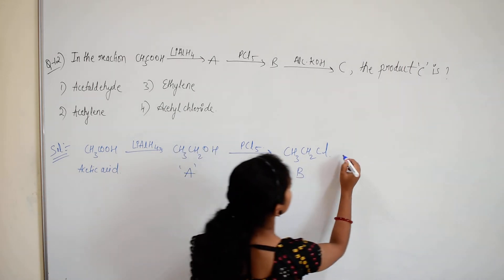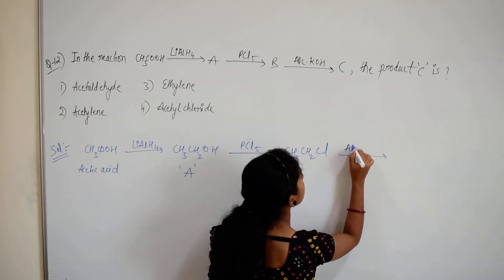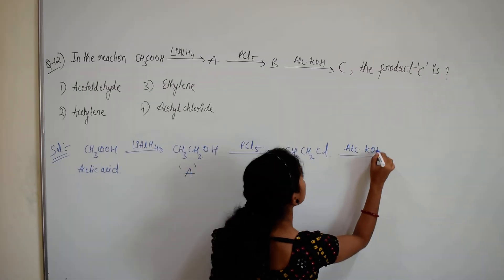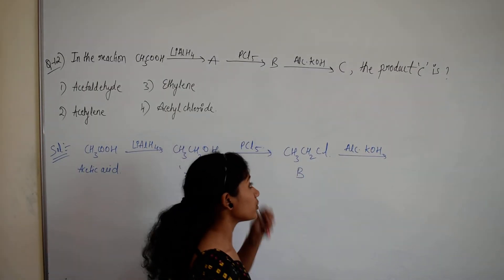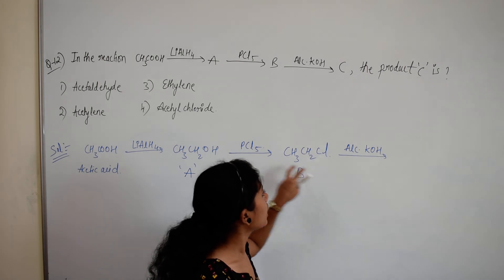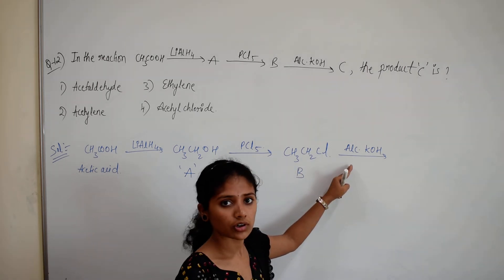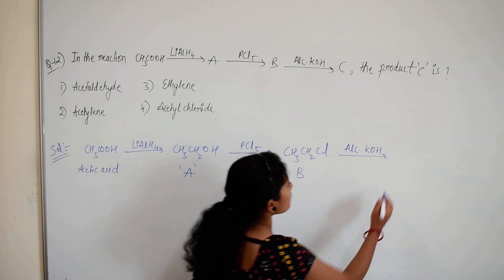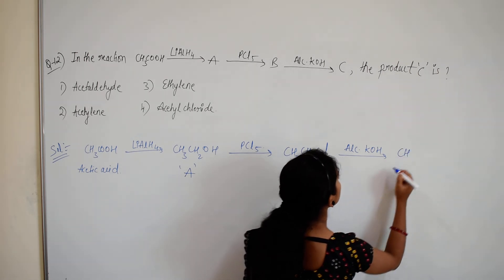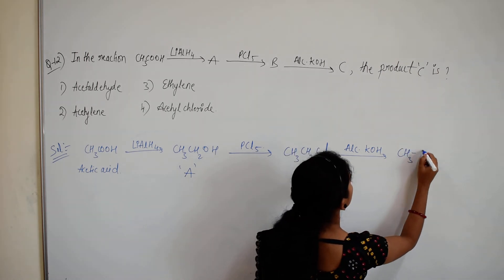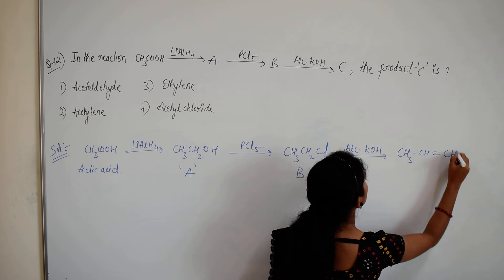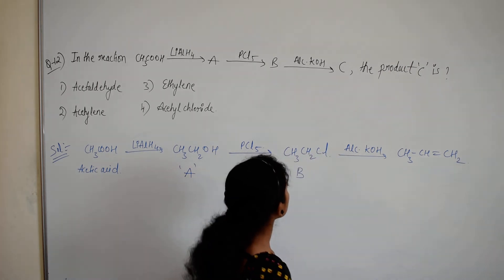And this is further reacting with alcoholic KOH. Alcoholic KOH will give elimination reaction. So we will get CH2=CH2.